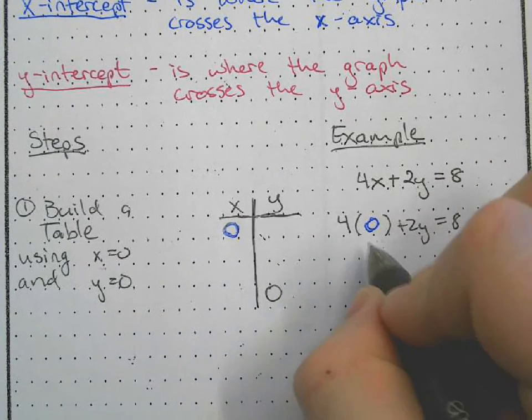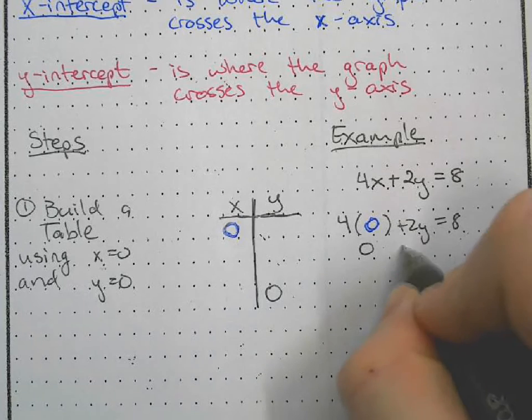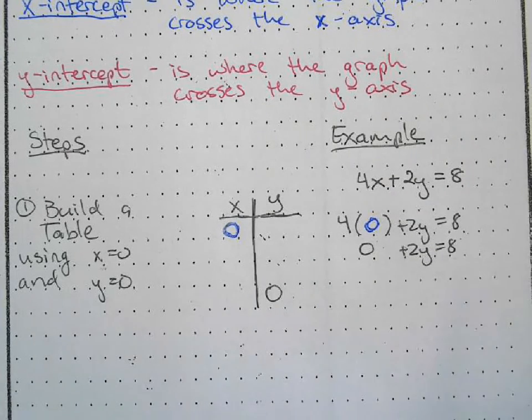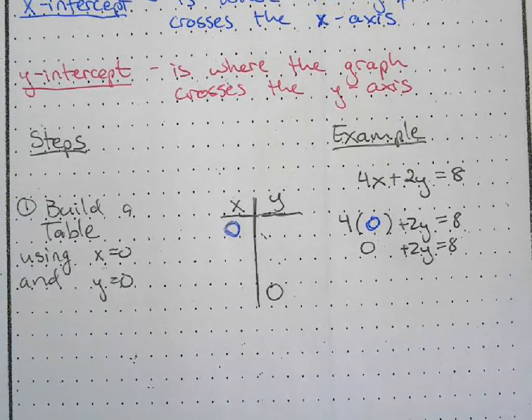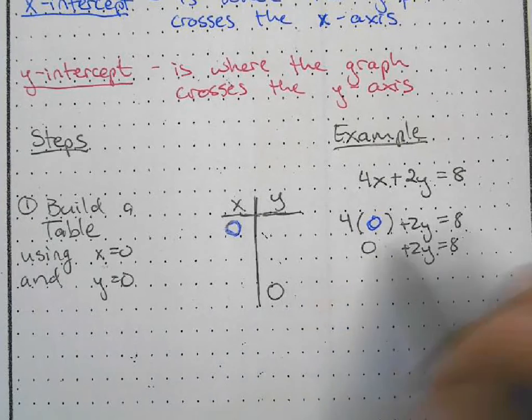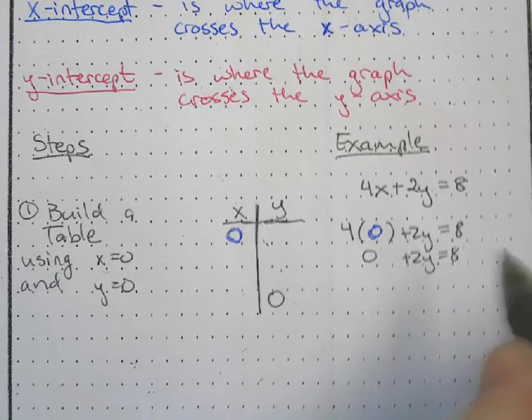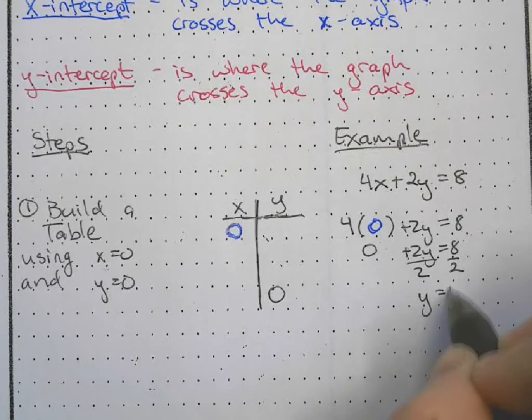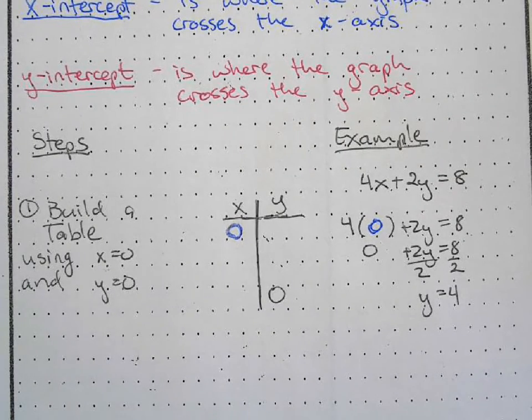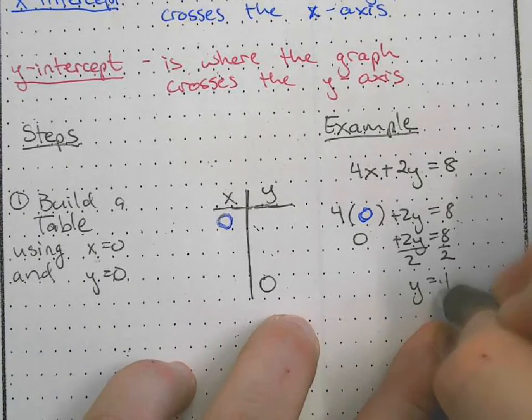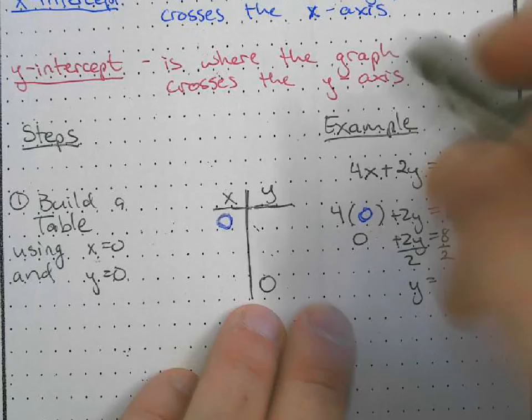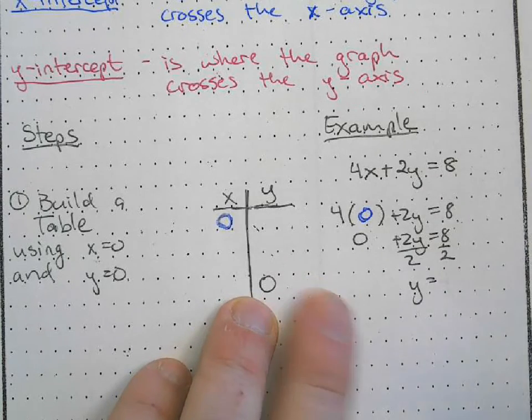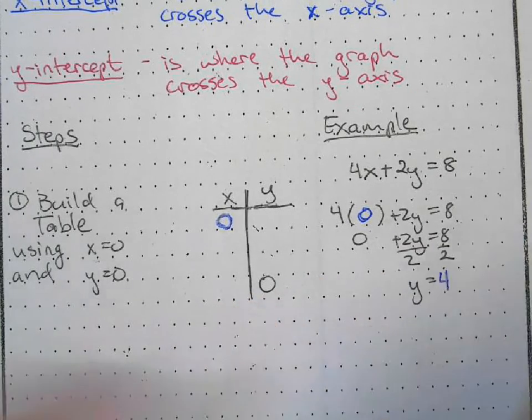4 times 0 is 0 plus 2y equals 8. The 0 goes away, so all we have to do is divide by 2 and we get y equals 4. So when x is 0, y is 4.